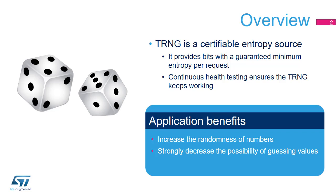The Random Number Generator, or RNG, integrated inside STM32 products provides random numbers which are used when producing an unpredictable result is desirable. Applications can benefit from the RNG to increase the randomness of numbers or to decrease the possibility of guessing certain values.